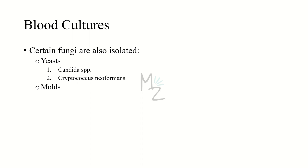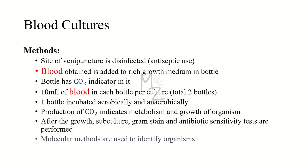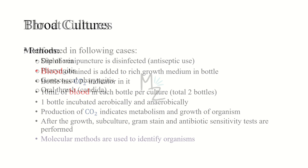For blood cultures, the venipuncture site must be cleansed with an antiseptic to prevent contamination by skin flora, usually Staphylococcus epidermidis. Blood obtained is added to a rich growth medium in a bottle containing an indicator for carbon dioxide production. Standard practice is to inoculate 10 ml of blood into each of two bottles per culture set — one incubated anaerobically and one aerobically. CO2 production indicates organism growth; Gram stain, subculture, and antibiotic sensitivity tests are then performed, with molecular methods also used in some hospitals.